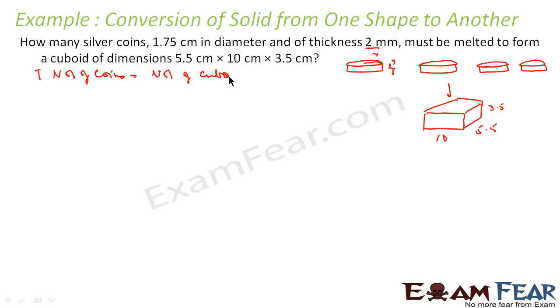So the total volume of coins will be equal to volume of cuboid. Because if you melt some coins, the volume of the metal you get is equal to the volume of cuboid. And total volume of coin is n into volume of one coin. If you assume there are n coins, this equals volume of cuboid. And volume of cuboid is l into b into h.